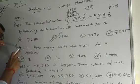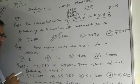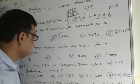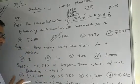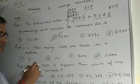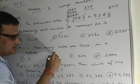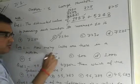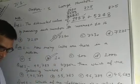Question number 2. How many lakhs are there in a million? In a million, there are 10 lakhs. So option B is the correct answer.